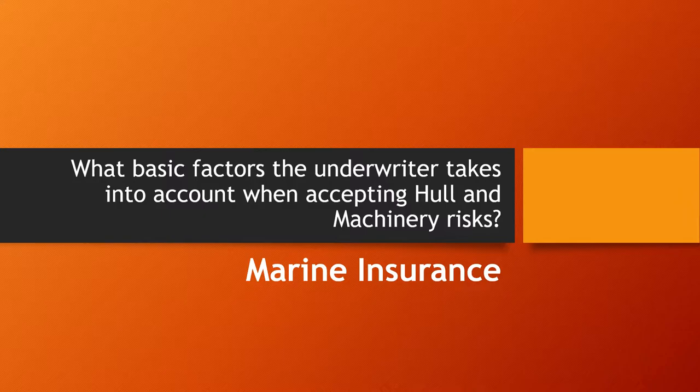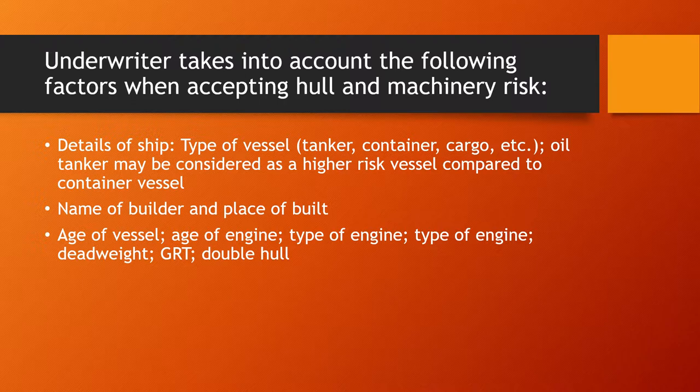The underwriter takes into account the following factors when accepting hull and machinery risks. Firstly, the details of the ship, which include the type of vessel — for example, whether it is an oil tanker, general cargo vessel, container vessel, etc. An oil tanker is a higher risk vessel compared to a container vessel, and hence the premium will differ.